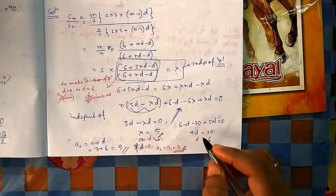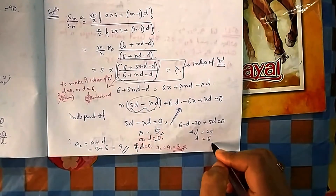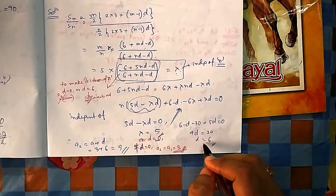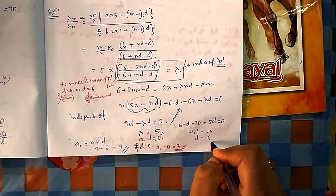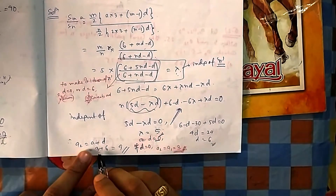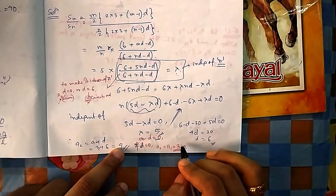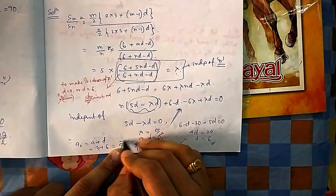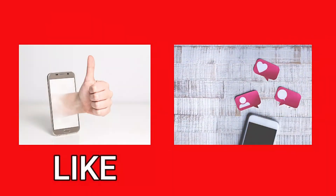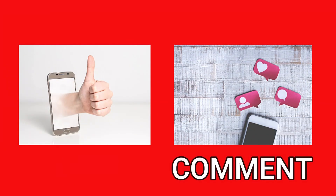So two answers are possible: a₂=3 and a₂=9, making this a multiple correct type question. If you liked the video, press the like button and please leave your valuable comments in the comment section.